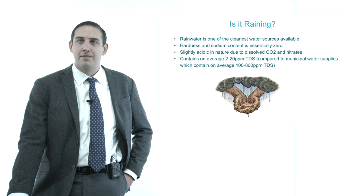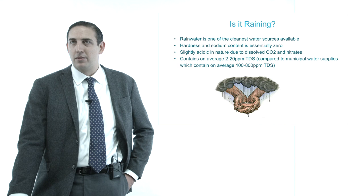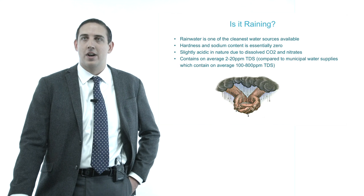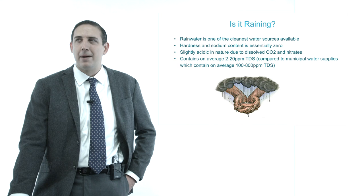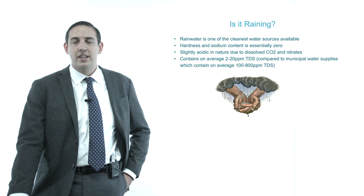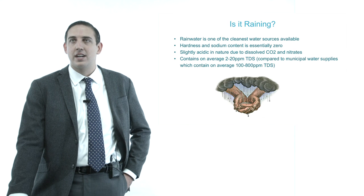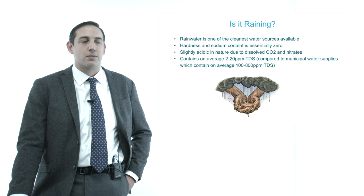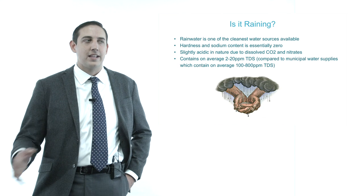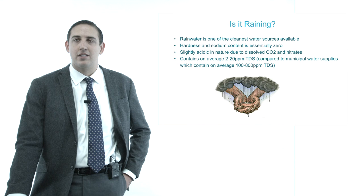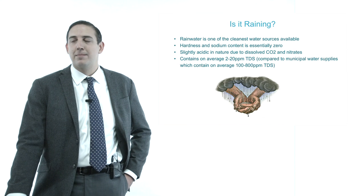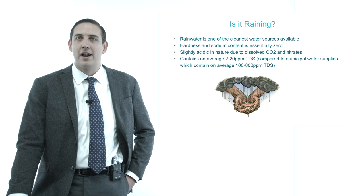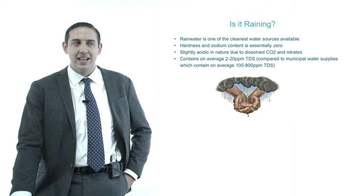Rainwater can be slightly acidic due to its contact with atmospheric gases. In the Northeast, average rainfall is about pH 4.5 to 5 due to CO2 and hydrogen sulfide gas from mining operations in the mid-Atlantic region. In the South, rainfall tends to be far more basic. Rainwater contains on average only about 2 to 20 parts per million of total dissolved solids — comparing that to municipal water sources, which can be almost 40 times that value, 100 to 800 ppm, because the only real contact is with particulate matter found in the atmosphere, such as phosphates and sulfates.